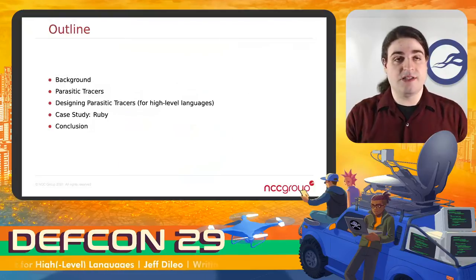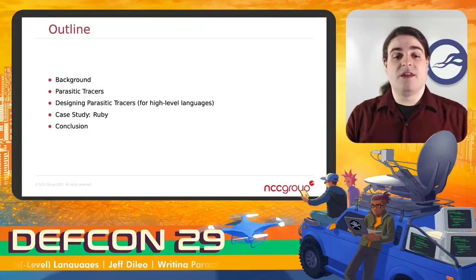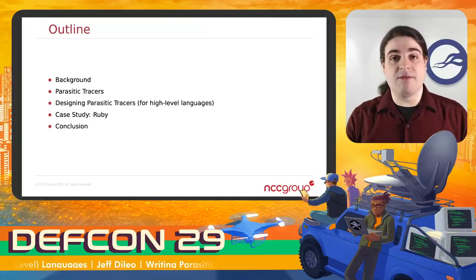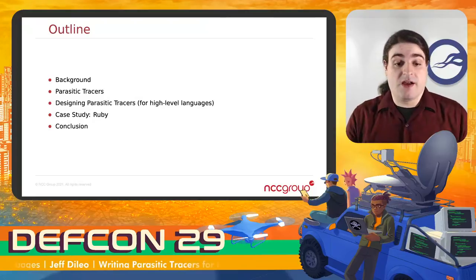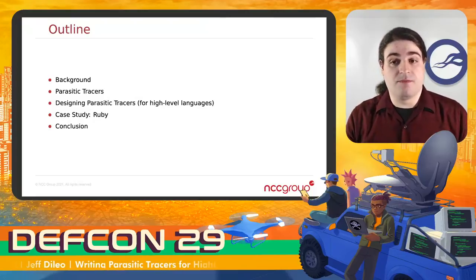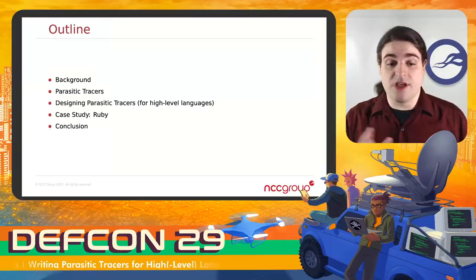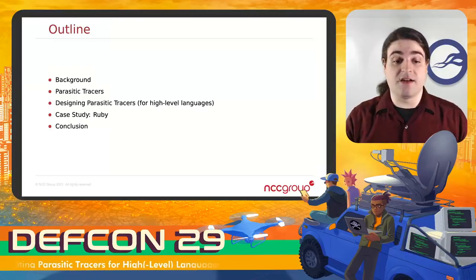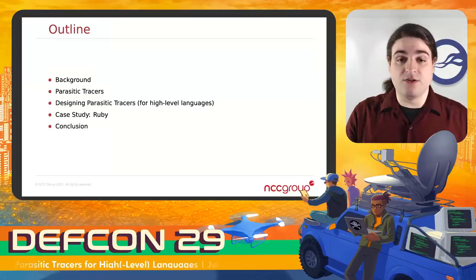So just as an outline of the structure of this talk, I'm going to talk about the background of what led me to this work, what parasitic tracers are, how to design them for tracing high-level language runtimes, looking at Ruby as a sort of case study, and then some concluding thoughts.